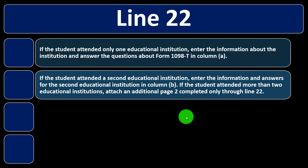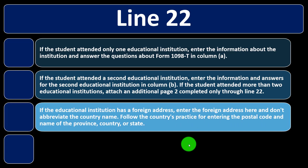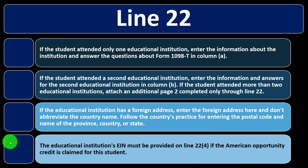If the student attended a second educational institution, enter that information in column B. If they attended more than two, attach an additional page completed only through line 22. If the educational institution has a foreign address, enter it without abbreviating the country name, following the country's practice for postal code and province or county. The institution's EIN must be provided so the IRS can identify them.